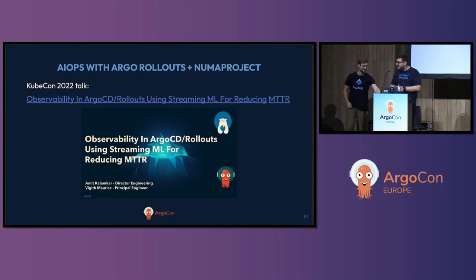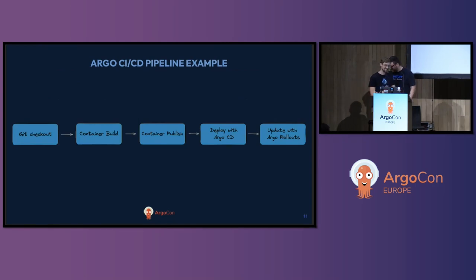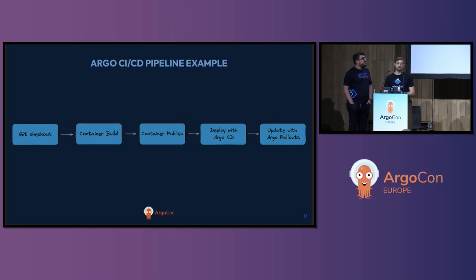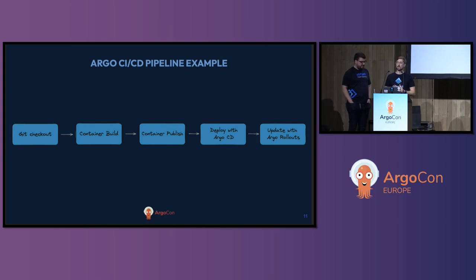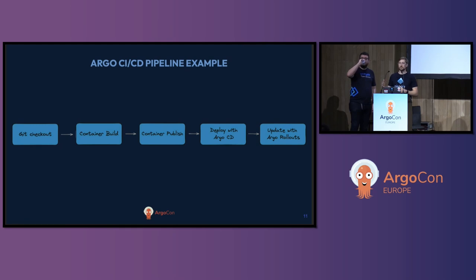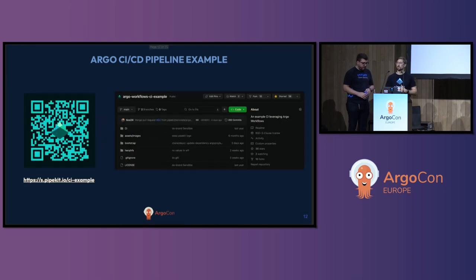I'm going to hand it over now to Kalen. At PipeKit, we migrated off Jenkins for our CI to Argo Workflows a while ago. We're going to take a look at an example pipeline and a demo to show how we use Argo Workflows, Argo CD, and Argo Rollouts in our end-to-end CICD pipeline. It's a simple example: git checkout, building a container, publishing it, deploying with Argo CD, and doing a canary deployment with Argo Rollouts. This example is built to be run anywhere — locally or on a cluster. Check it out on GitHub; it's our free Argo CICD pipeline example.